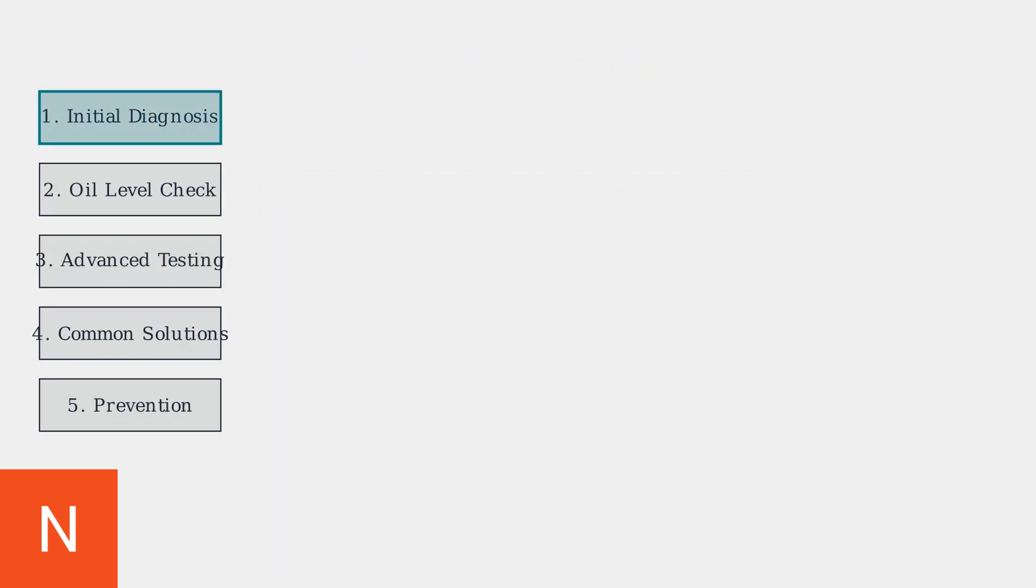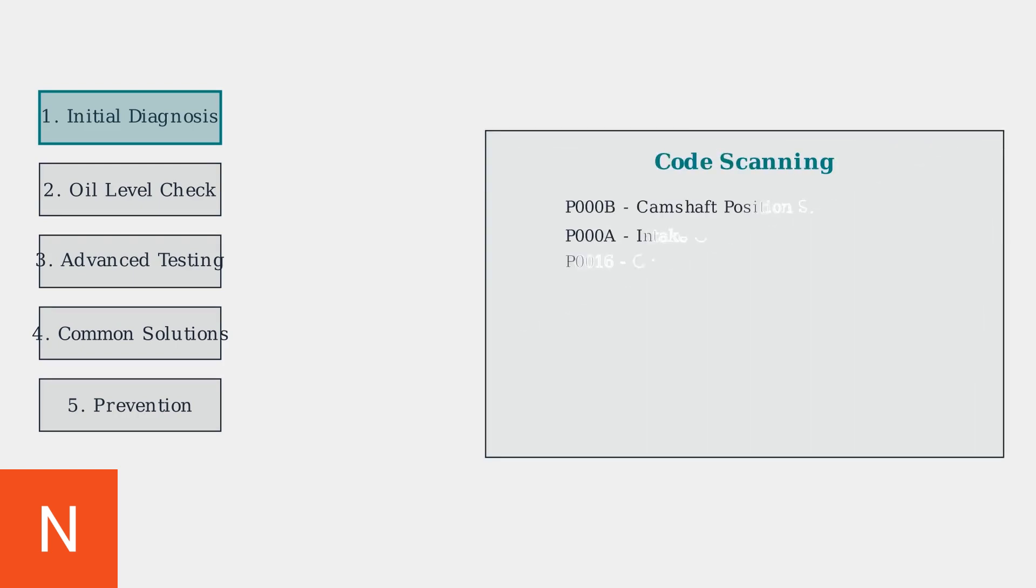Diagnosing P000B requires a systematic approach. We'll follow five key steps to identify and fix the camshaft position sensor issue. Step one is initial diagnosis. Start by scanning for additional related codes like P00A, P0016, or P0117. These codes often appear together and provide clues about the root cause.